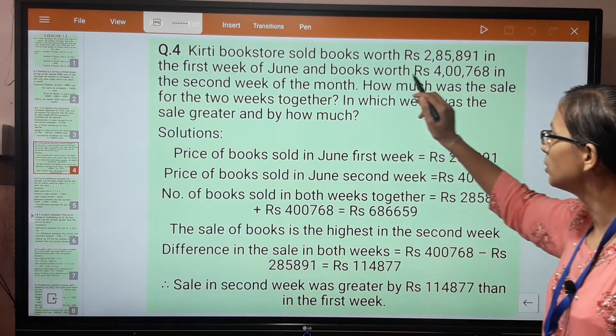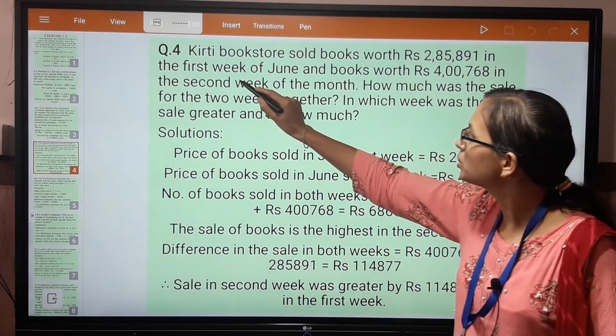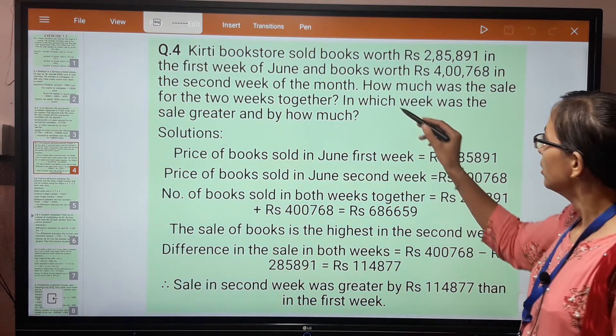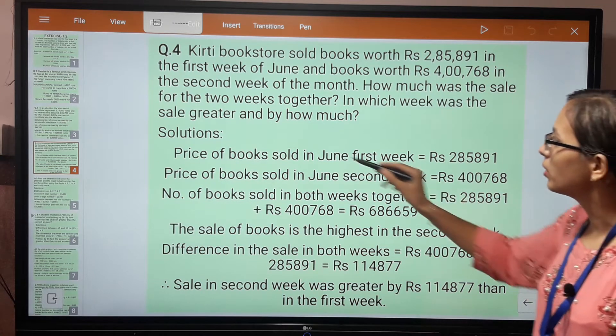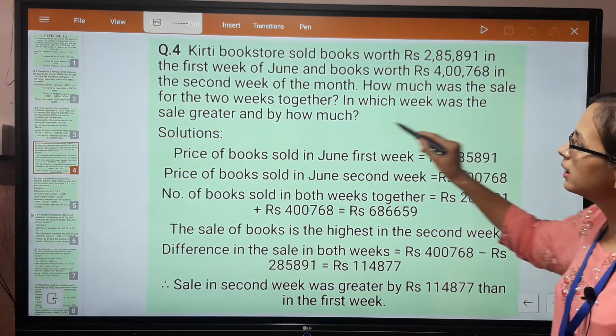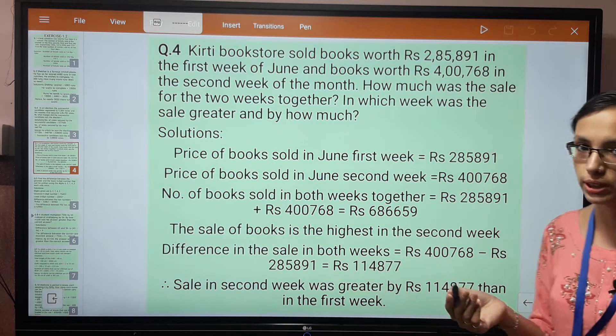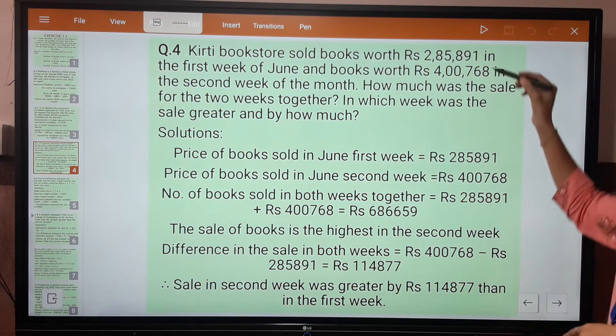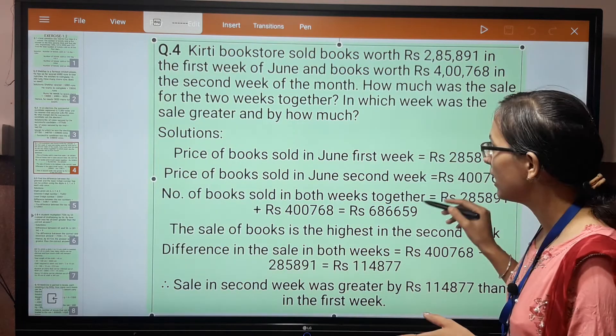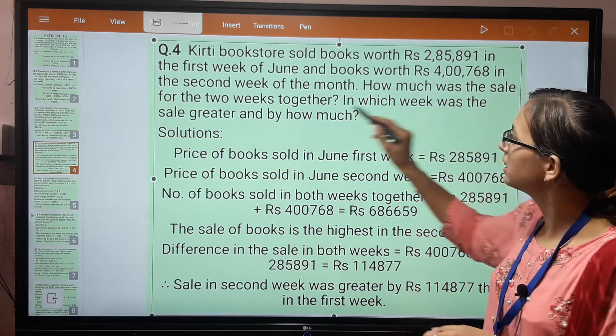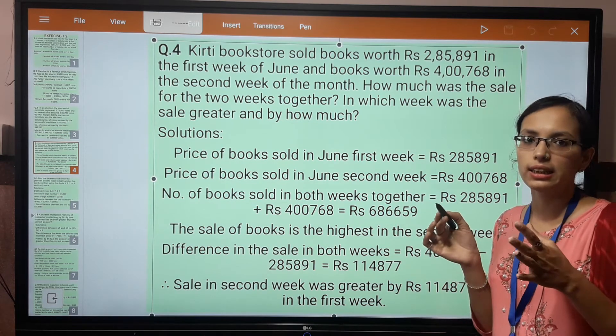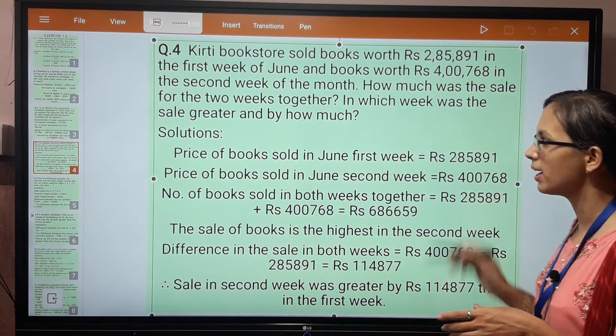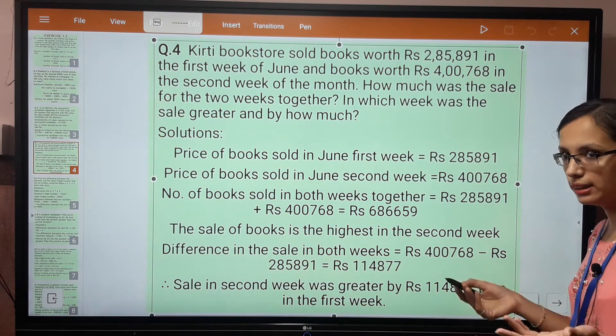Question number 4: Kirti Book Store sold books worth rupees this in the first week of June and books worth rupees this in the second week of the month. How much was the sale for the two weeks together? In which week was the sale greater and by how much? The Kirti book store sold books in the first and second week of June. First, we need to find the total sale for both weeks together, and then determine which week had greater sales and by how much.